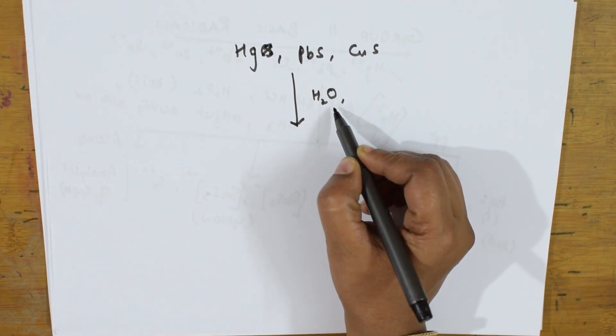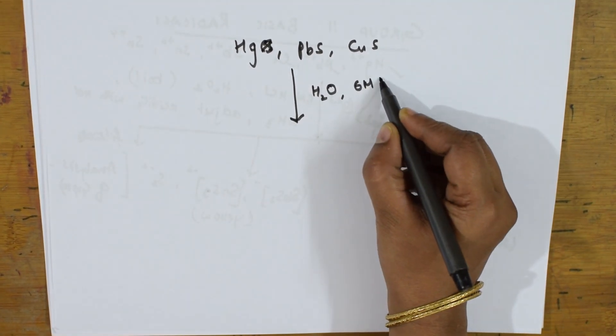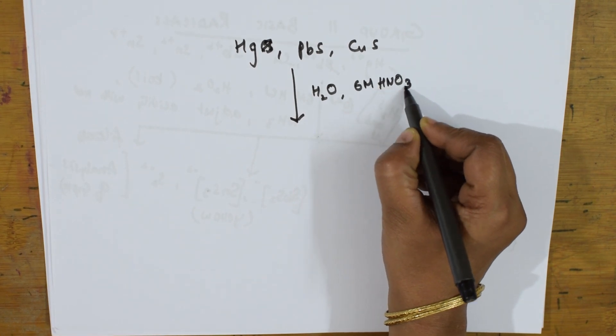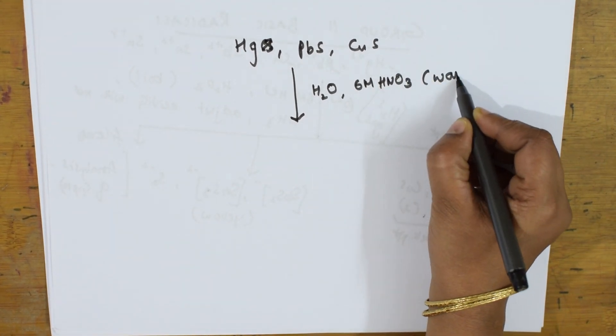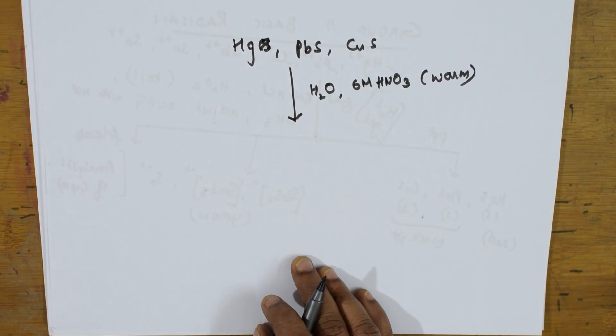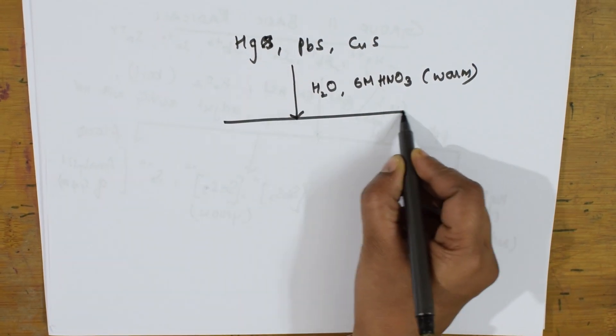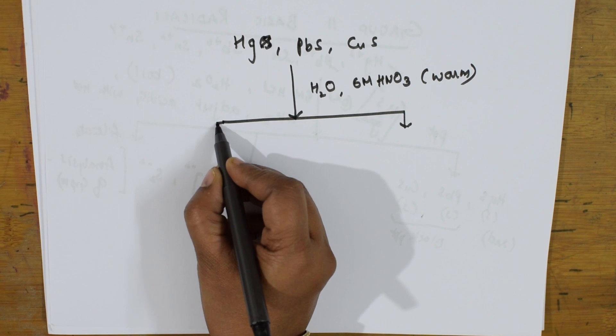I'll be adding 6 molar nitric acid and I'll be warming it. I'll be warming the test tube. When I warm it, these will be getting separated forming different precipitates.